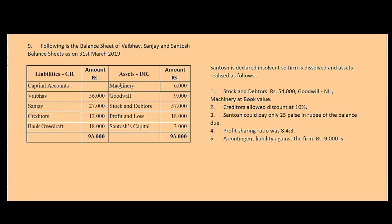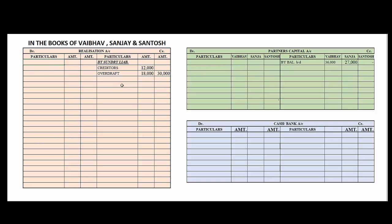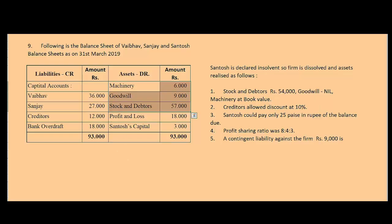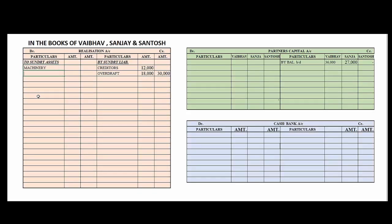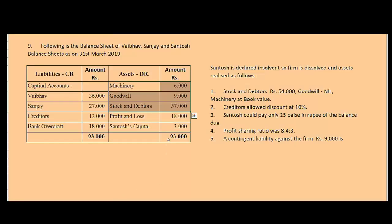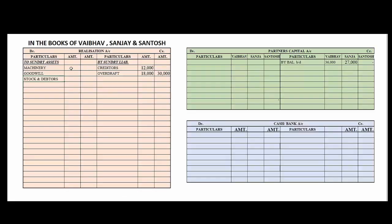Now on the assets side — machinery, goodwill, stock and debtors together will go to the debit side of the realization account. We will make a head called 'sundry assets'. Sundry assets include machinery, goodwill, stock, and debtors. The amounts are 6,000, 9,000, and 57,000. Total comes to 72,000, which will be taken in the order column.